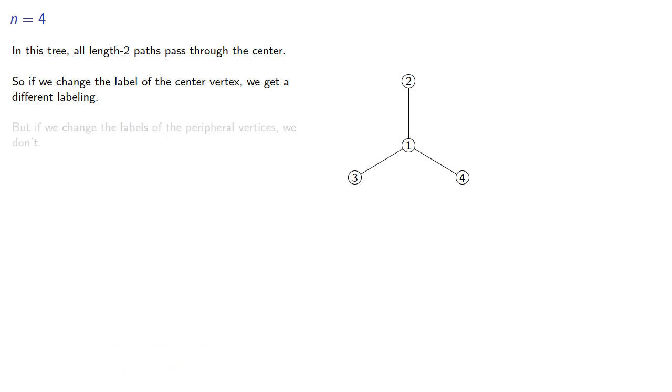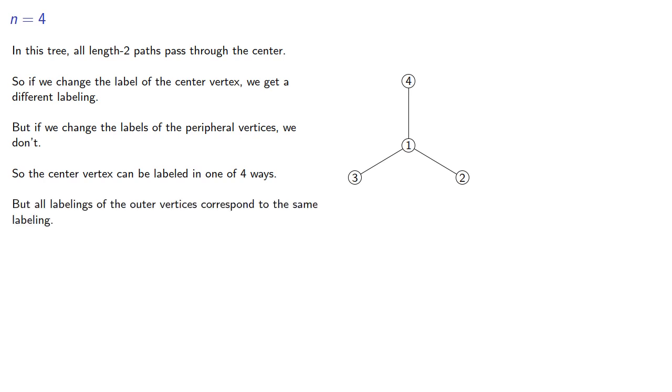But if we change the labels of the peripheral vertices, we don't. So the center vertex can be labeled in one of 4 ways, but the labelings of the outer vertices all correspond to the same labeling. So the star has 4 possible labelings.